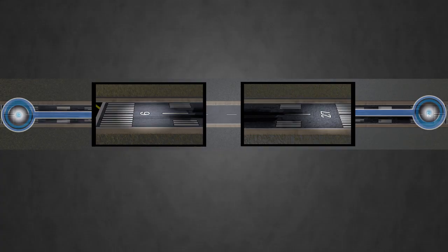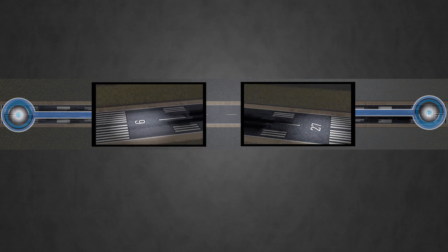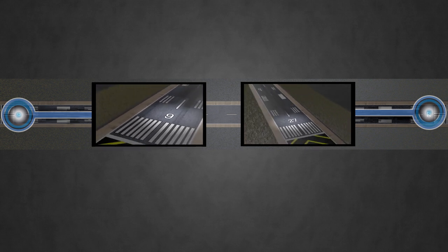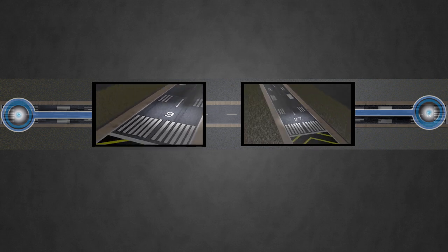Since runways have two ends and are designated with two different sets of numbers, the rule for identifying a runway is to start with the smaller designator first and say each number individually. You identify this runway in our animation as 9-27, not 927.